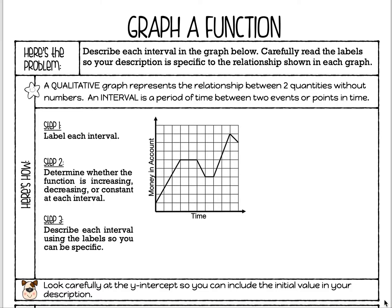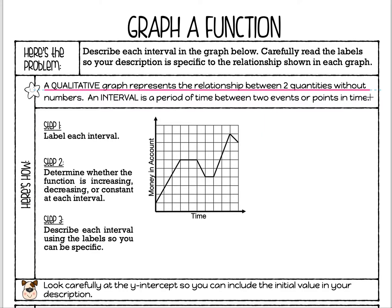Here's the problem: describe each interval in the graph below, carefully reading the labels so your description is specific to the relationship shown. The first thing we're going to start with is a couple of definitions. Our first one is a qualitative graph. A qualitative graph represents the relationship between two quantities — like two amounts — without numbers. Every graph we've done has had numbers, but if you look at this graph, there are no numbers, just labels.